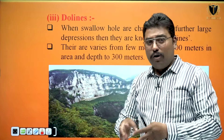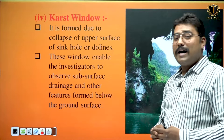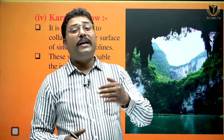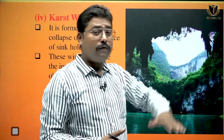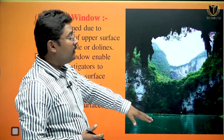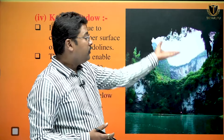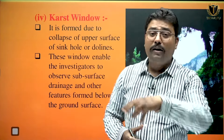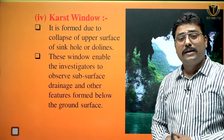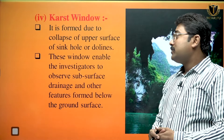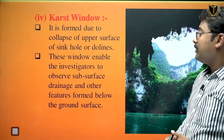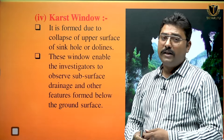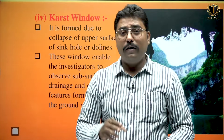When the area of a doline increases it will be considered as a karst window. As you can see, the image has been taken from inside the cave, so you are able to see the overlying features, and from the top you will be able to see the inner features — that is a karst window. It is formed due to the collapse of the upper surface of a sinkhole or doline. These windows enable investigators to observe subsurface drainage and other features formed below the ground surface.